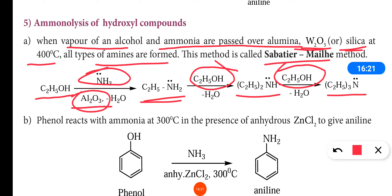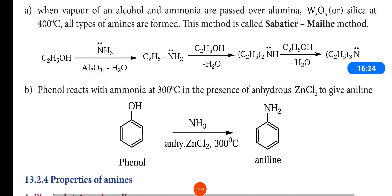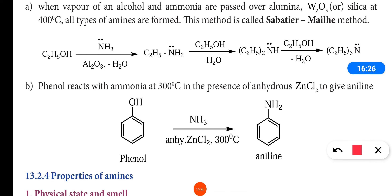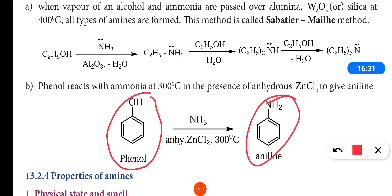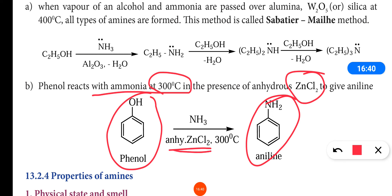Next is the preparation of aniline (benzeneamine) from phenol. If we take phenol for ammonolysis, it will form aniline. Phenol reacts with ammonia at 300 degrees Celsius in the presence of anhydrous zinc chloride to give benzeneamine or aniline.